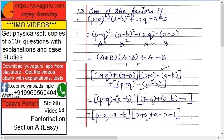So what does the expression become? A² - B² + A - B, right? What is A² - B²? It is (A+B)(A-B). And this A-B as it is. Now instead of A, put back the values: (p+q+a-b)(p+q-a+b) and this A-B as it is, plus p+q-a+b.